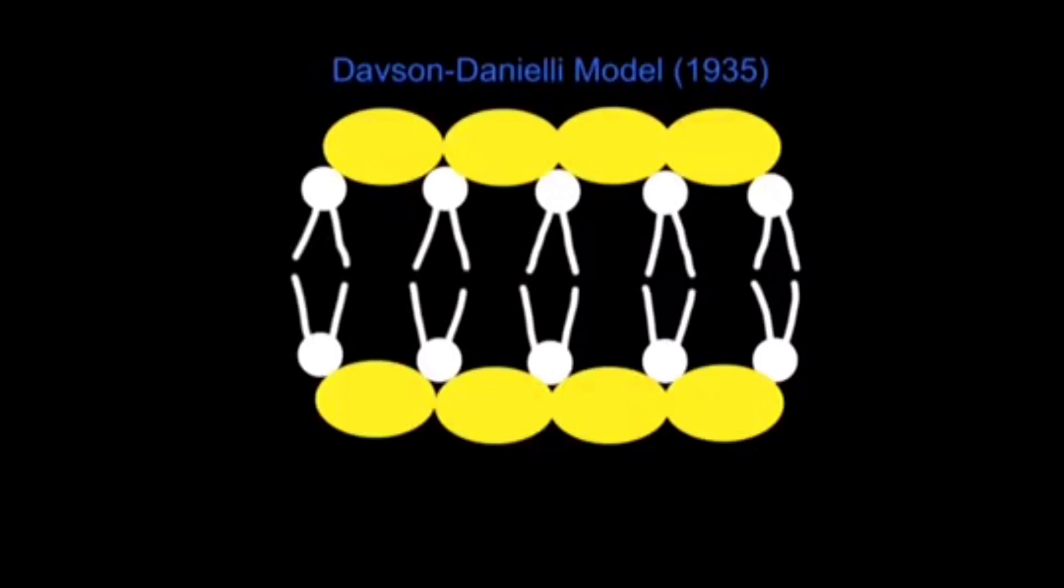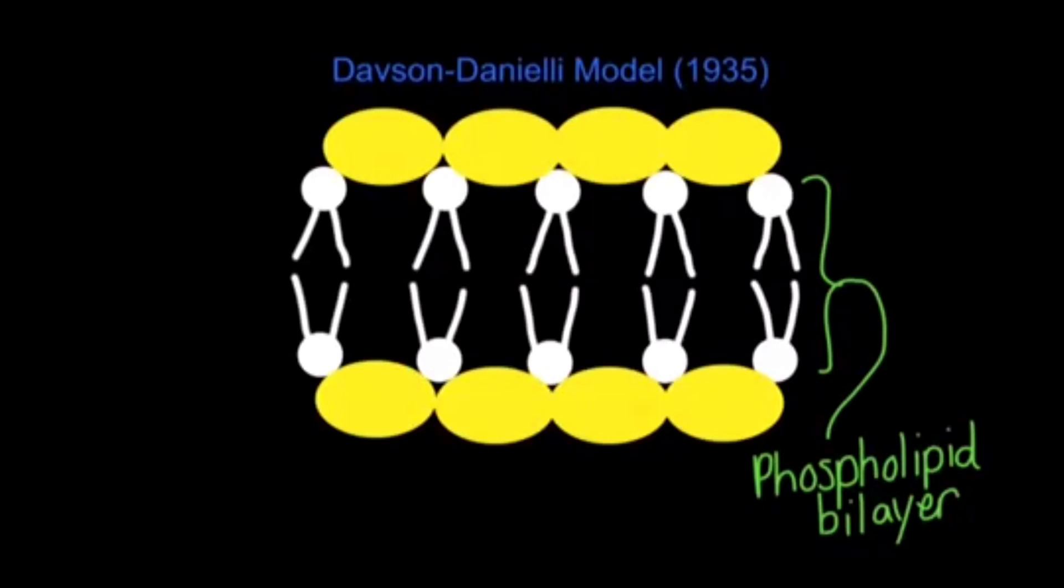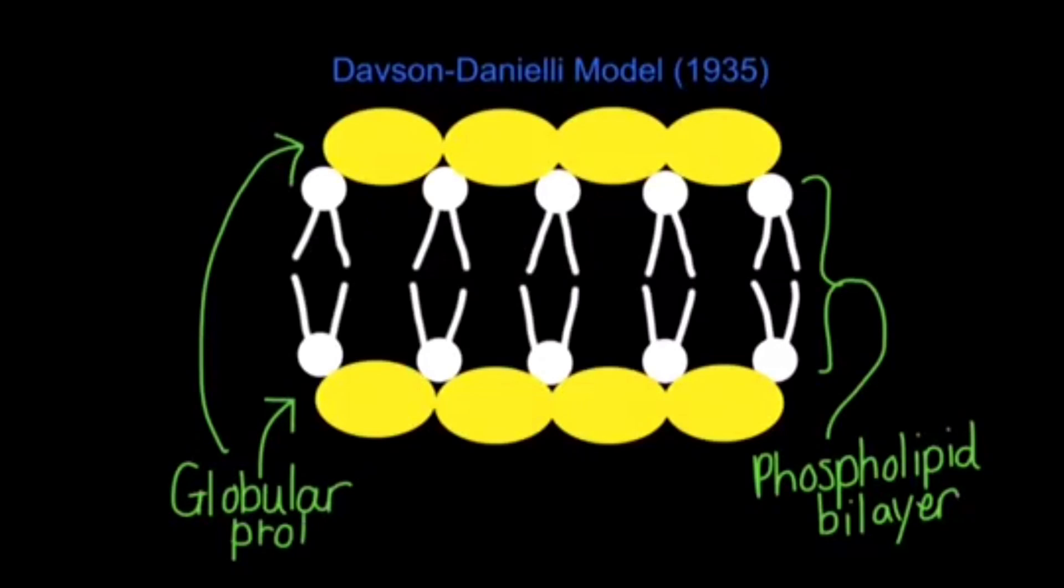So in 1935, Davison and Daniele proposed their model of the cell membrane. It included the phospholipid bilayer on the inside and globular proteins coating both of the outer surfaces. In this model, the proteins do not permeate the lipid bilayer.